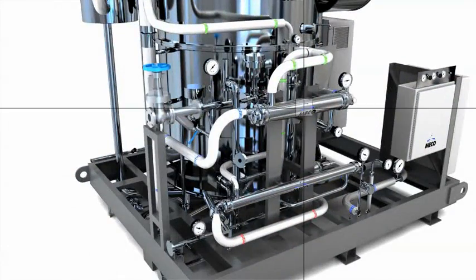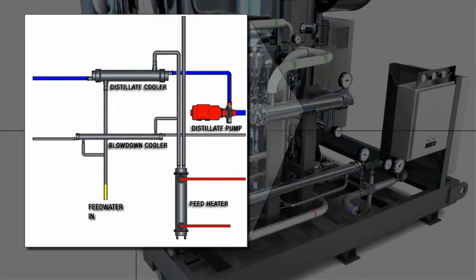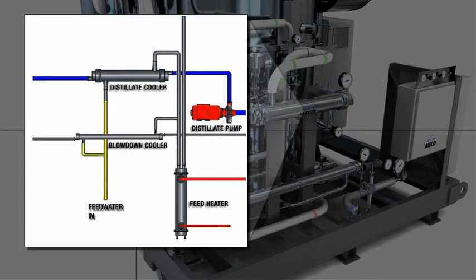The process begins when feed water is preheated by the distillate cooler and blow-down cooler, as well as the feed heater. This efficient heat exchange in the coolers minimizes the system's energy consumption by reducing demand on the feed heater.